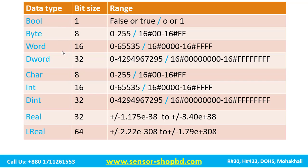The data types we can use are: Byte, Word, Double Word, Character, Integer, Double Integer, and Real or Long Real. Boolean is true or false — 0 or 1 — and its bit size is 1 bit. Byte is 8 bit. Word is 16 bit. Double Word is 32 bit.